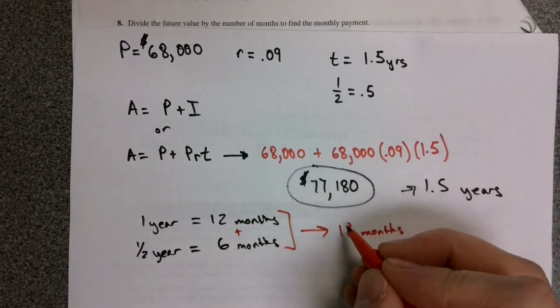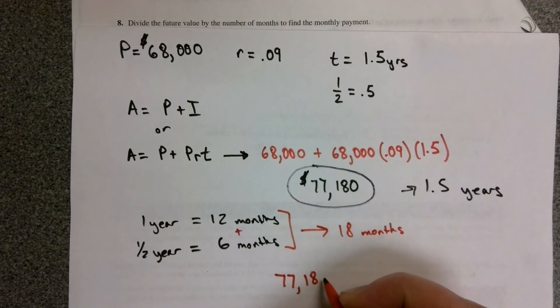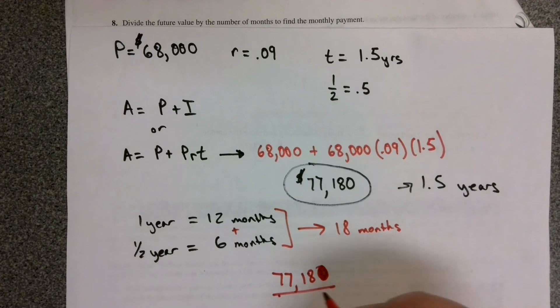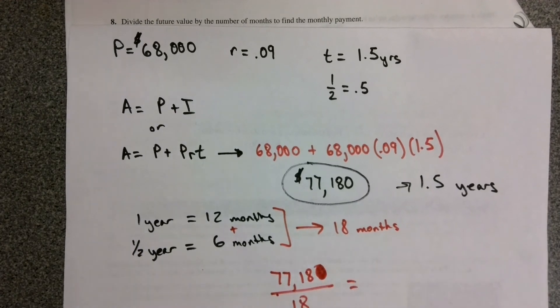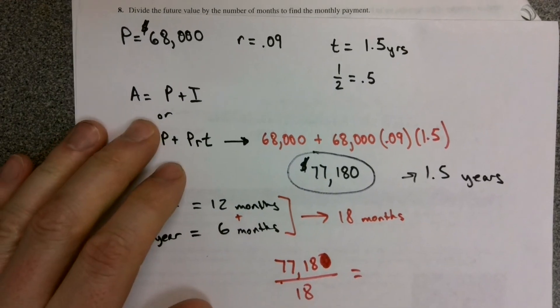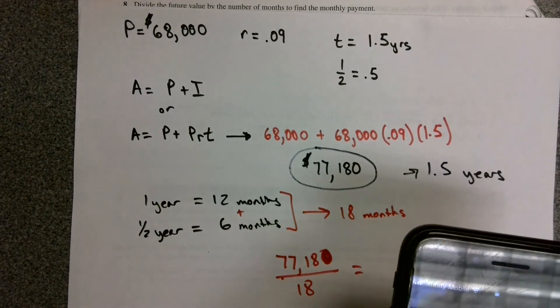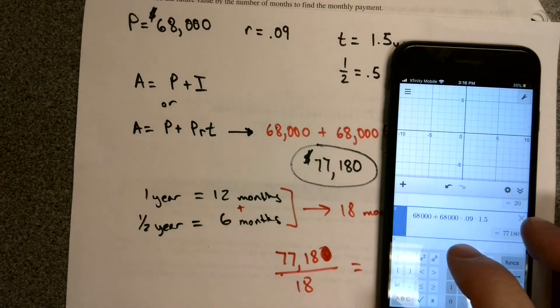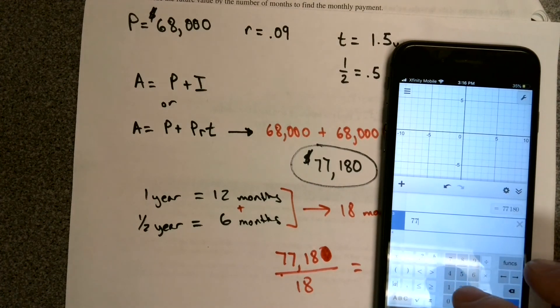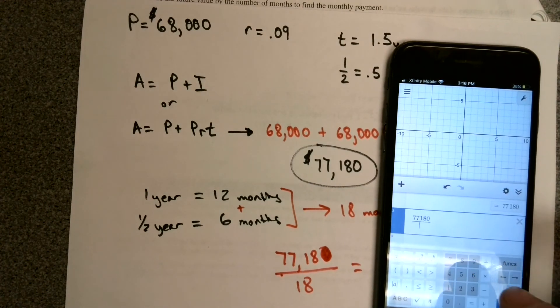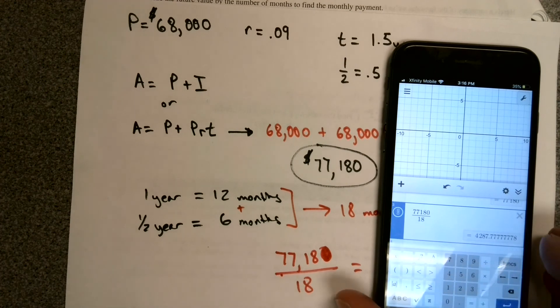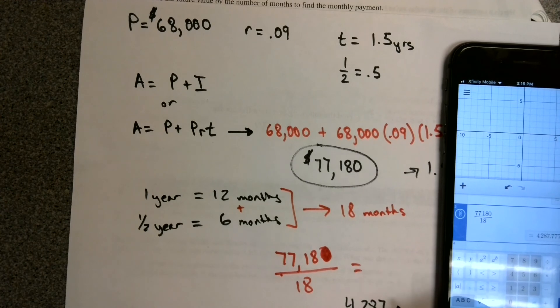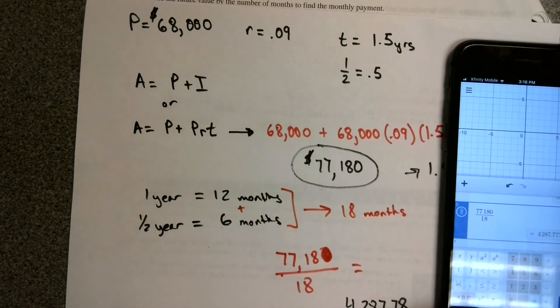To find how much we're going to pay per month, we simply divide the $77,180 by the 18 months, and that's going to give us our monthly payment. Using our handy Desmos app here, we take that $77,180 divided by 18, and we're going to owe $4,287.78.